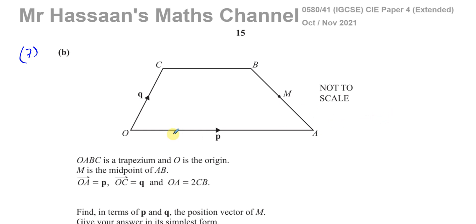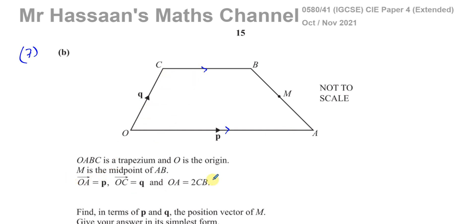It says OABC is a trapezium, O is the origin, and M is the midpoint of AB — so obviously these two sides are parallel. It says OA is equal to p, OC is equal to q, and OA is equal to 2CB.